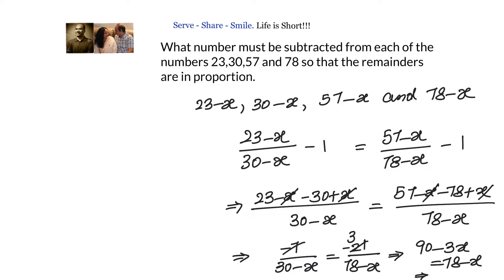Solving 90 − 3x = 78 − x gives 2x = 12, so x = 6.